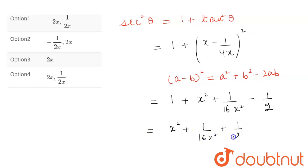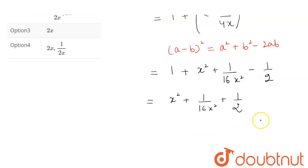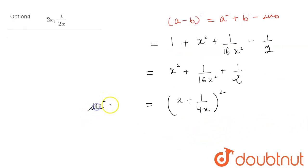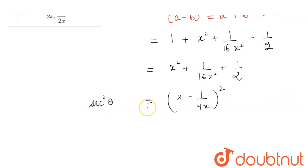Solving this we get x² plus 1 upon 16x² plus 1/2. We see this forms the formula for (a plus b) whole square, where a is x and b is 1 upon 4x. So we get the value of sec²θ to be equal to (x plus 1 upon 4x) whole square.